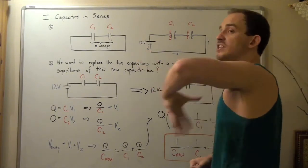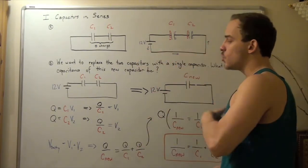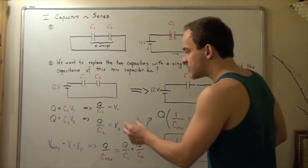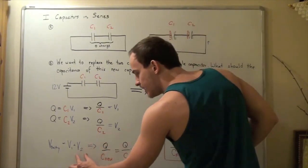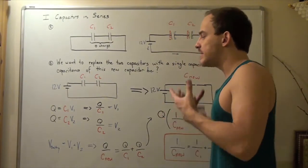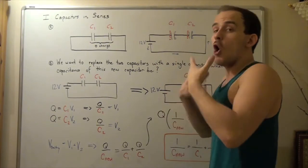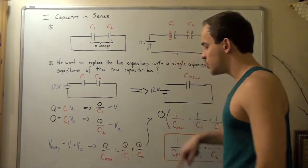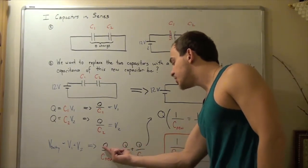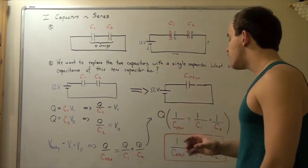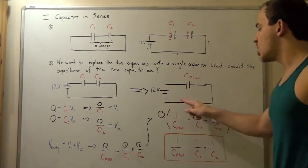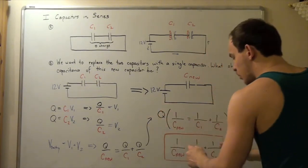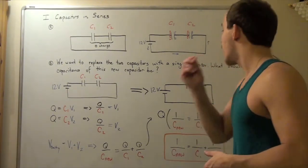Setting up the equation: V_battery equals V1 plus V2, which equals q/C1 plus q/C2. The voltage across C_nu equals the charge q divided by C_nu, so we write q/C_nu = q/C1 + q/C2. Factoring out q, we get q times (1/C_nu) = q times (1/C1 + 1/C2), which simplifies to: 1/C_nu = 1/C1 + 1/C2. This equation gives us the equivalent capacitance C_nu.